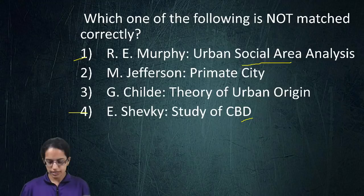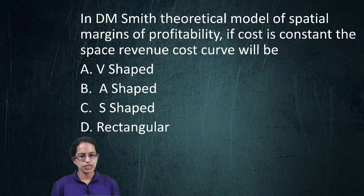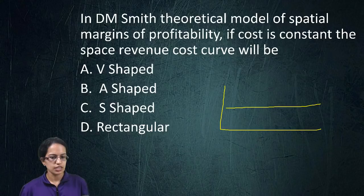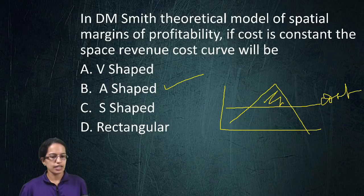The next question talks about Smith's theoretical model for spatial margin for profitability. Here, the cost is constant and you are drawing the revenue curve to identify the profit area. The resulting shape is an A-shaped curve, since cost is constant while variable revenue is shown. With this, we cover the questions where students had doubts. Wishing you good luck — you can definitely score a lot. Have a good one.